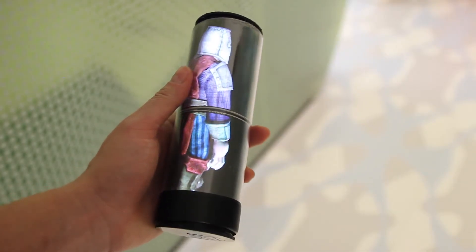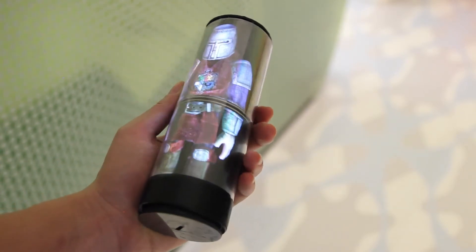IMU data is used to orient graphics on the device toward the user, providing the illusion of 3D motion parallax.